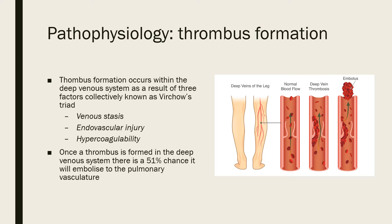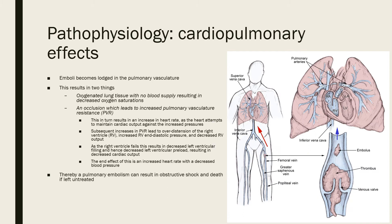Once the thrombus is formed in the deep venous system, there's a roughly 50% chance it will embolize to the pulmonary vasculature. When that embolus becomes lodged there, it essentially results in two things. The first is that there is oxygenated lung tissue now with no blood supply — you have working pulmonary tissue but no blood coming through, so no gas exchange, and therefore decreased oxygen saturations.